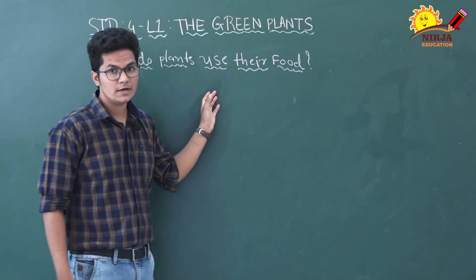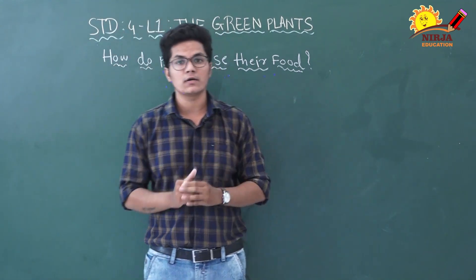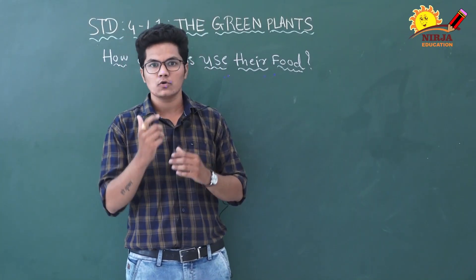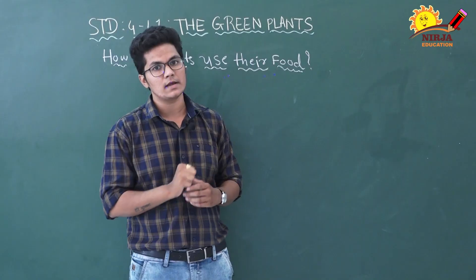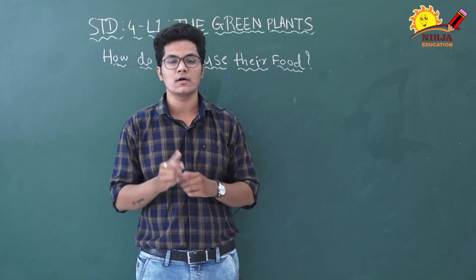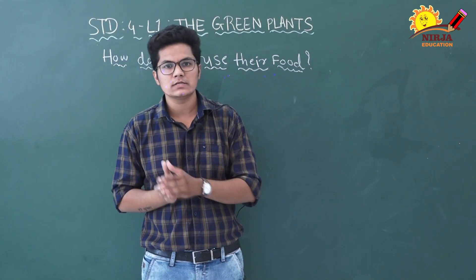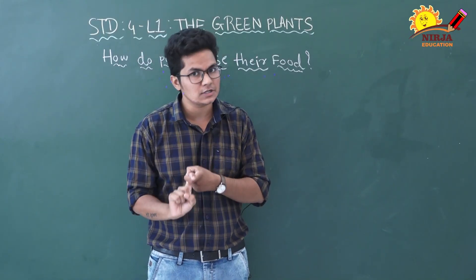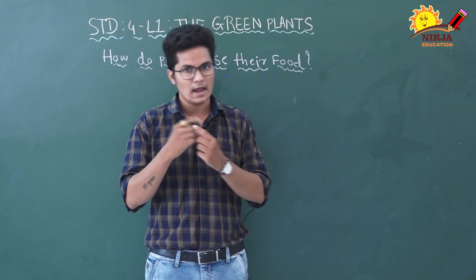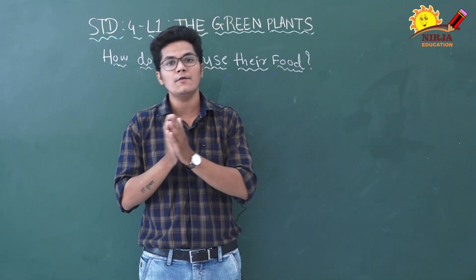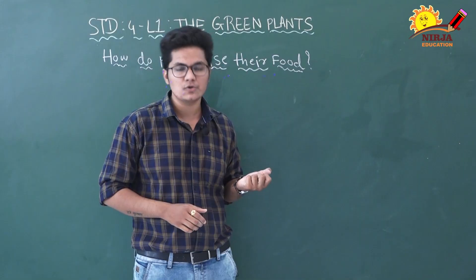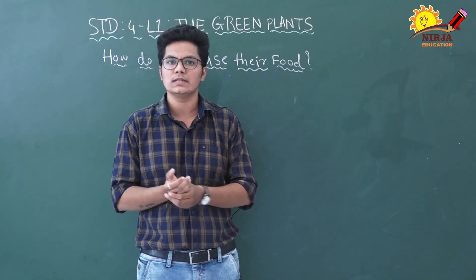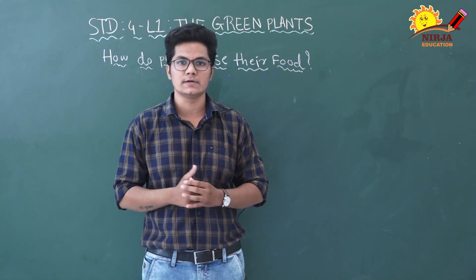Carbon dioxide and water enter the leaf when chlorophyll absorbs the sunlight. The energy from the sunlight makes carbon dioxide and water react with each other to make glucose and oxygen. Carbon dioxide and water use the sunlight's energy to react together and that reaction produces glucose and oxygen.